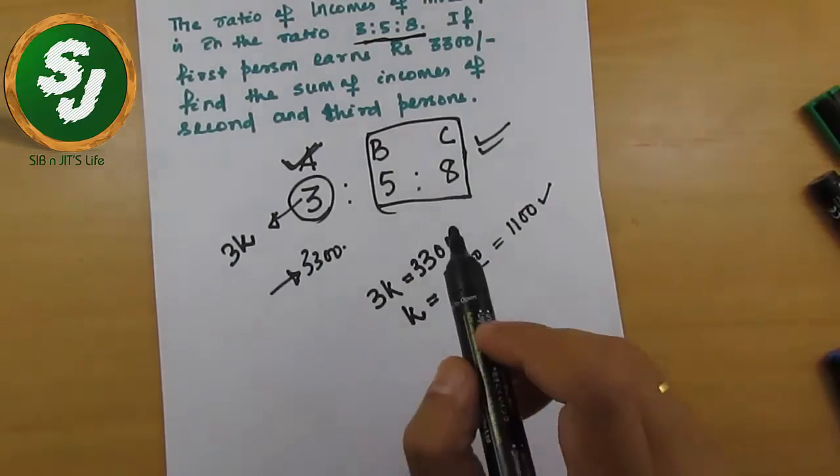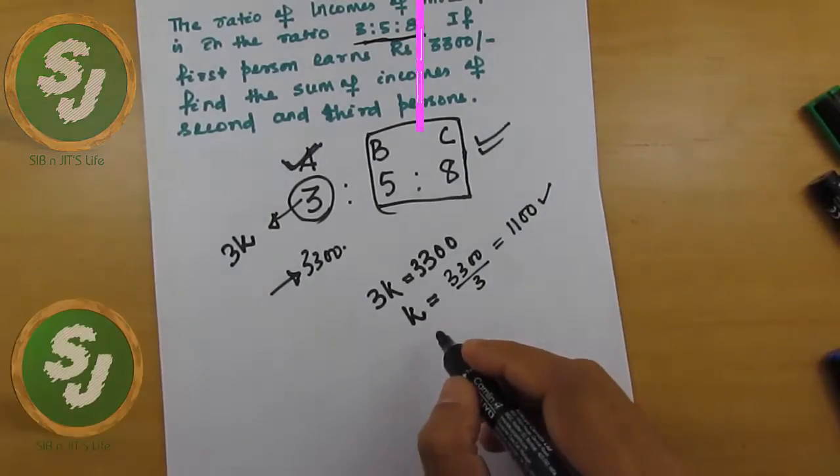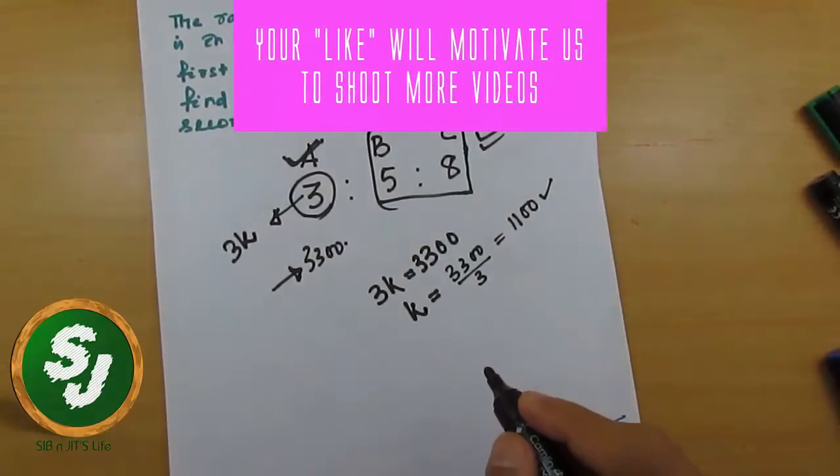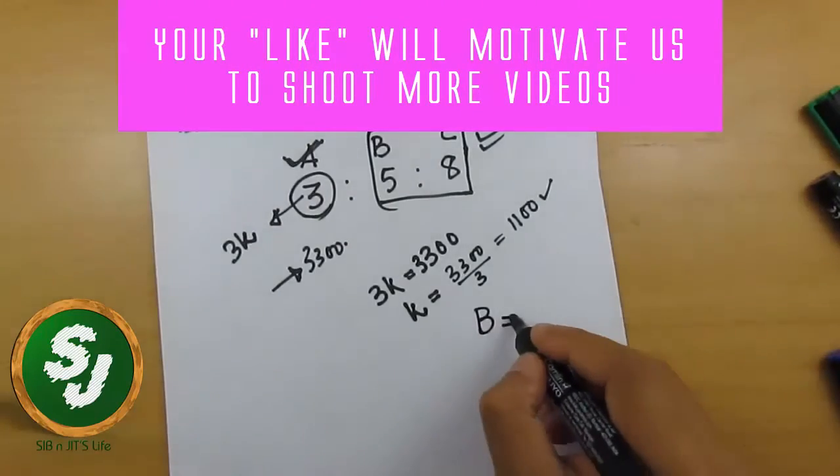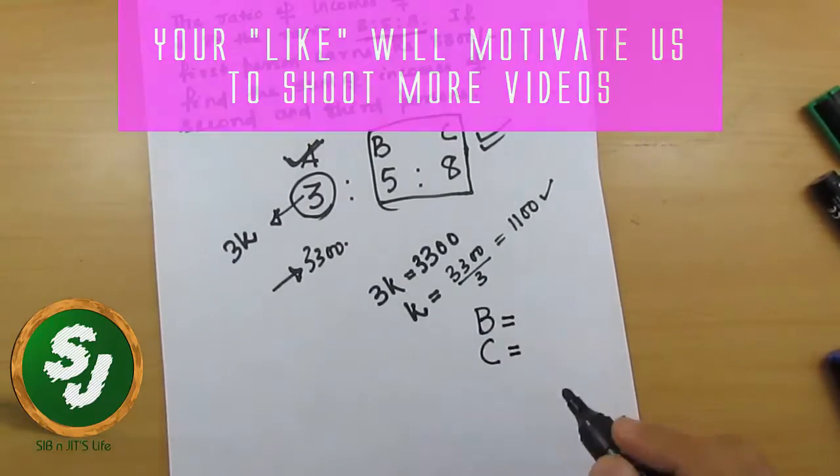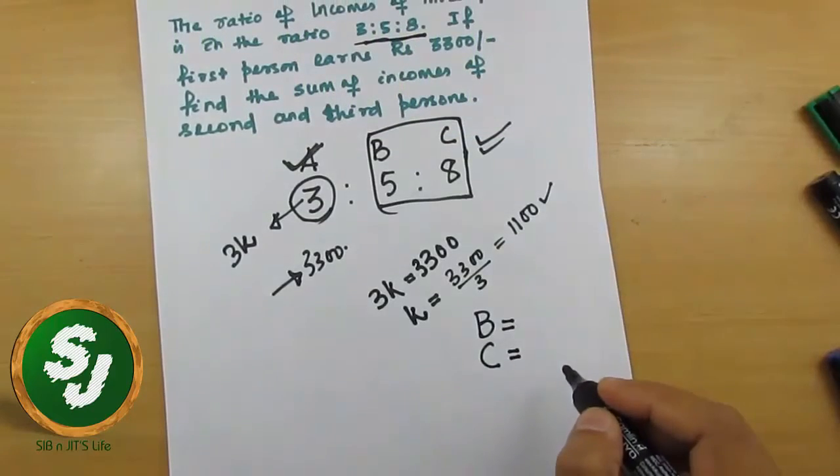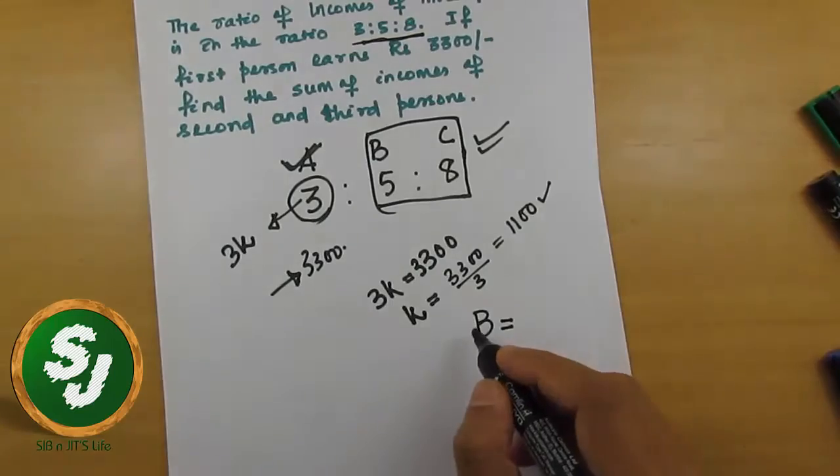Many students do a small mistake in this kind of question. They try to find the value of B first, then the value of C, then they add it up, because in the question it is asked find the sum of incomes of B and C.